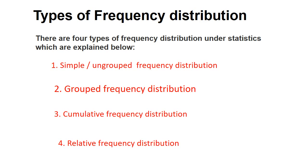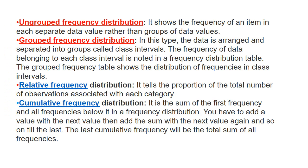Now, types of frequency distribution. There are four types: first, simple or ungrouped frequency distribution; second, grouped frequency distribution; third, cumulative frequency distribution; and the last, relative frequency distribution. Ungrouped frequency distribution shows the frequency of an item in each separate data value rather than groups of data values.